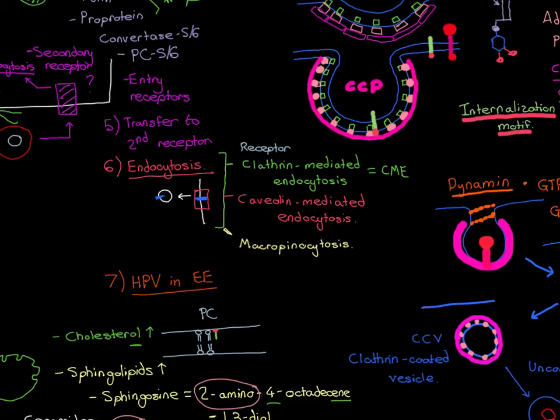Welcome back to this next video in which we are discussing the human papillomavirus entry mechanism. In this next video we're going to discuss macropinocytosis, which is the final of the three endocytosis processes that I want to discuss, and another endocytosis process by which we believe HPV variants may gain access to the endocytic pathway of the basal cells.